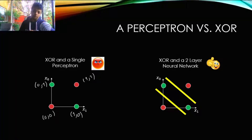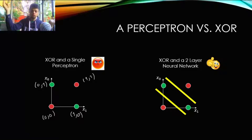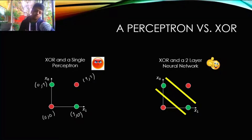A single line can never separate the XOR examples perfectly. A single perceptron will fail to learn any valid decision boundary here. However, if you have more than one layer — at least two layers — you can come up with two lines. Anything between the two lines is considered a positive example, and anything outside those two lines is a negative example. This demonstrates the incapability of a single perceptron and the necessity of more complex neural networks.